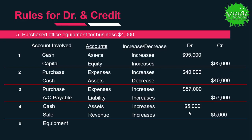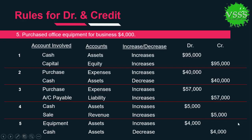The last transaction is purchasing office equipment for the business for $4,000. Two accounts are affected: equipment and cash. Equipment is an asset; it increases, so it is debited by $4,000. Cash also belongs to assets, but in this transaction cash decreases. When an asset decreases, its value is placed on the credit side, so we put $4,000 on the credit side.